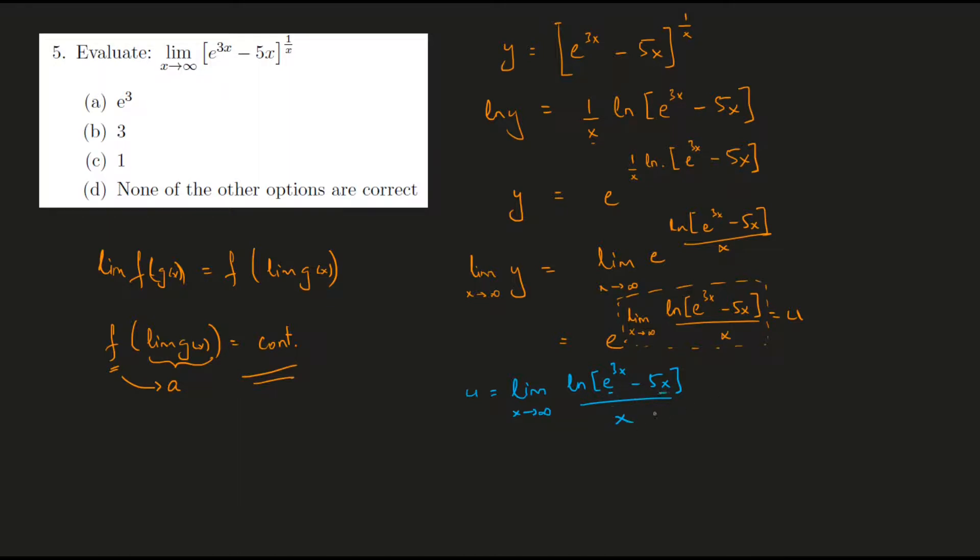But in the numerator we have an exponential function and then we are subtracting a linear function from it. And because the exponential function grows much faster than a simple linear function, we can safely assume that this entire thing would blow up to infinity.